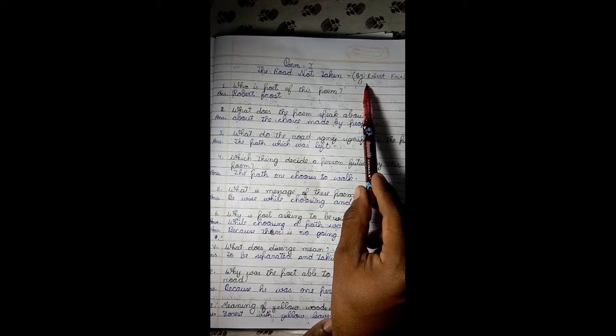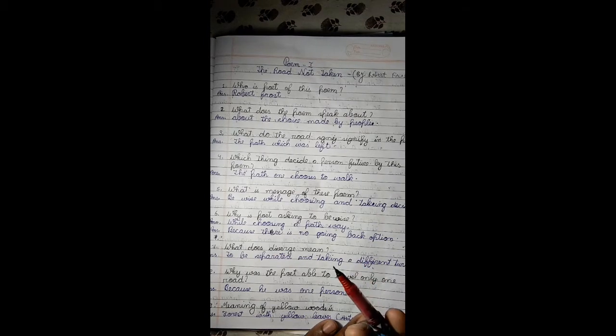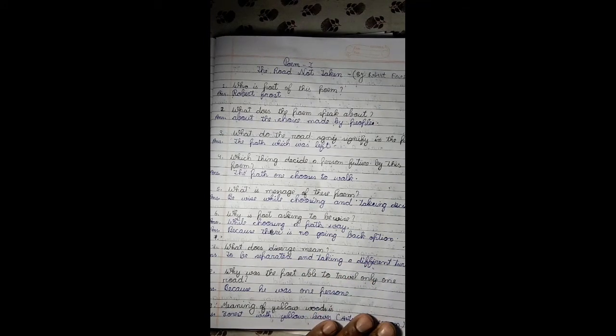In the same manner, Robert Frost and William Wordsworth, these are the two poets best known for natural poems. Another important name is Robert Browning, so if Robert Browning or Robert Frost comes in MCQs, this poem 'The Road Not Taken' is composed by Robert Frost.